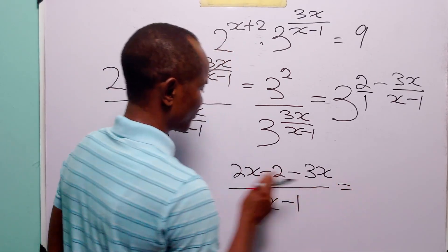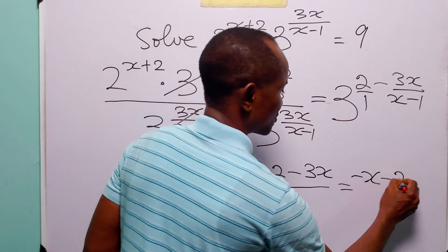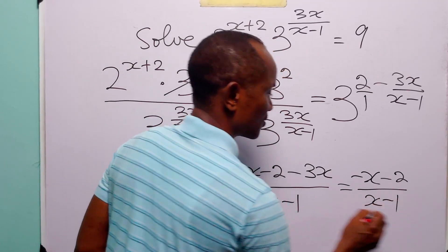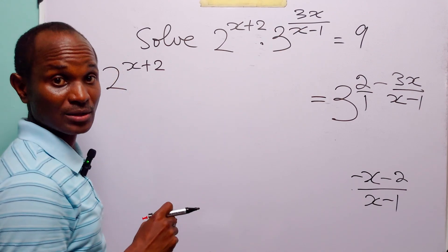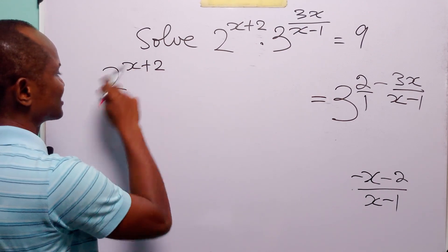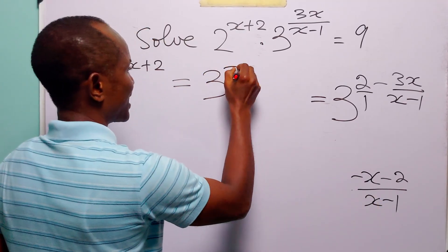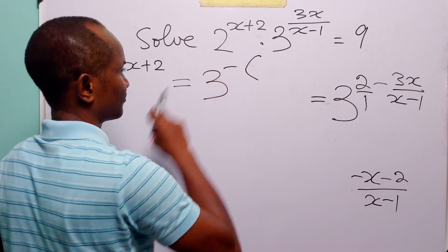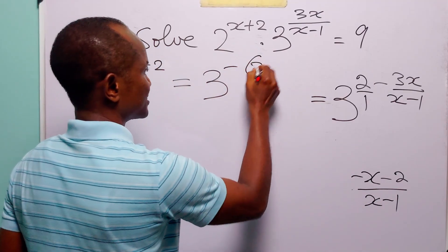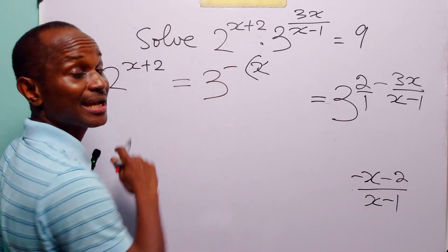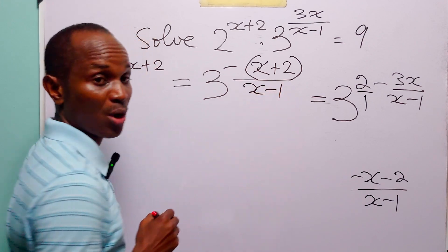Now to simplify: 2x minus 3x is equal to minus x. Here we have minus 2, divided by x minus 1. So we have that this original equation is now equal to 2 to the power x plus 2, is equal to 3 to the power — let me introduce a bracket — minus x minus 2, divided by minus 1, which gives us plus 2 over x minus 1.